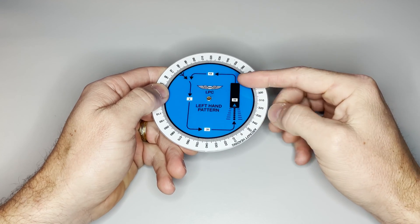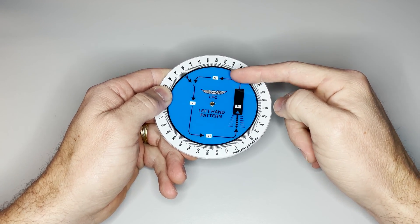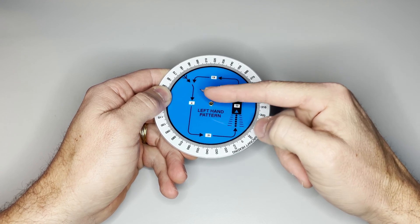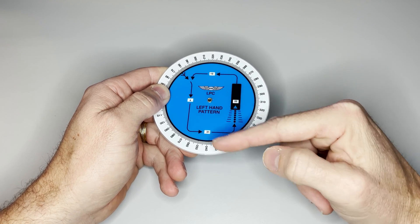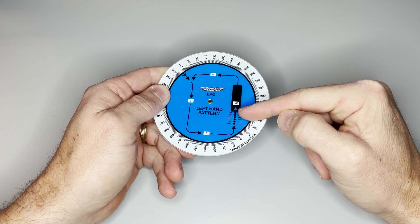Now the computer tells me the headings for each leg around the pattern. You can see crosswind is heading 130, downwind is 040, base is going to be 310, and of course final approach 220.